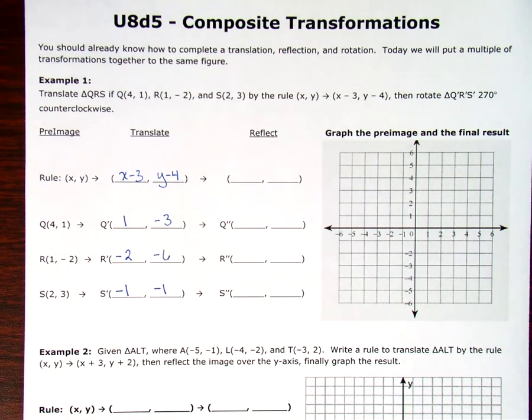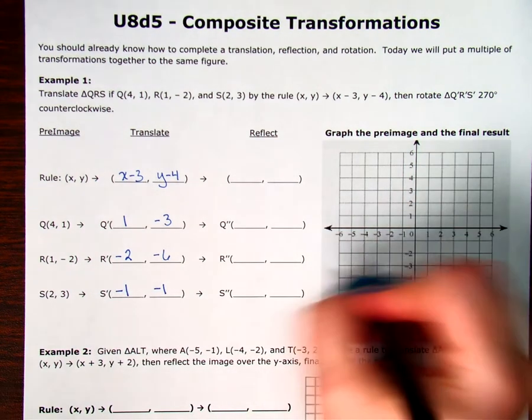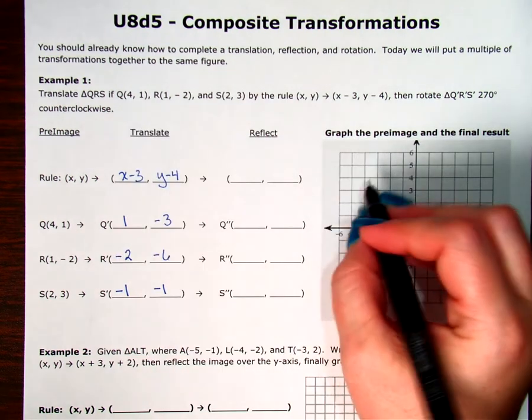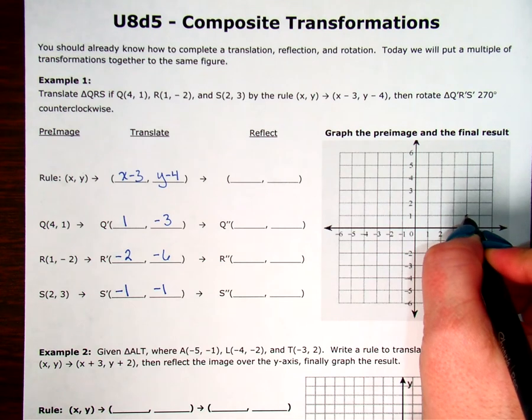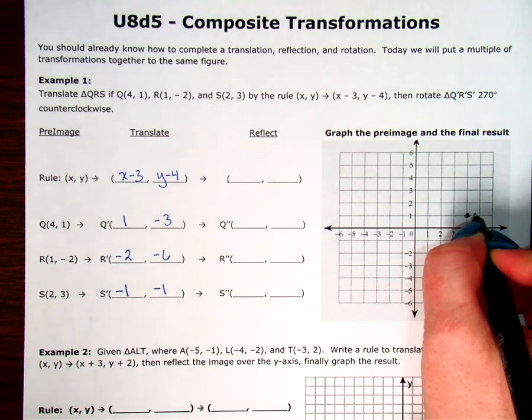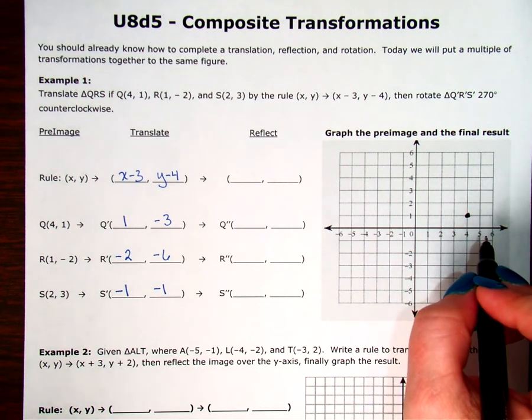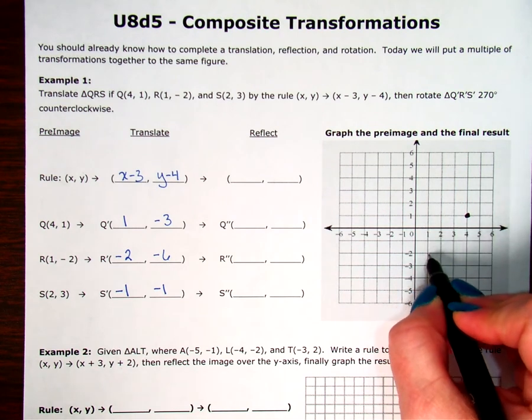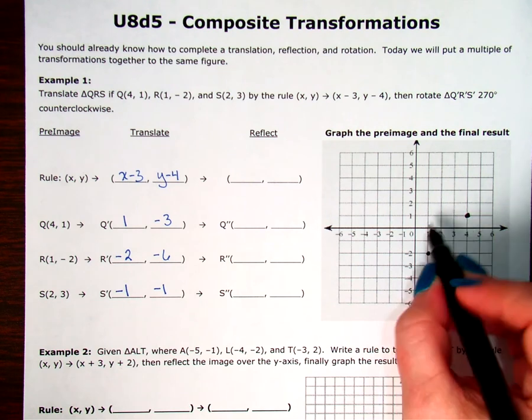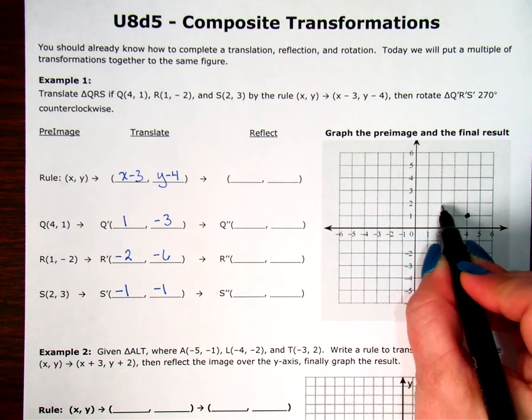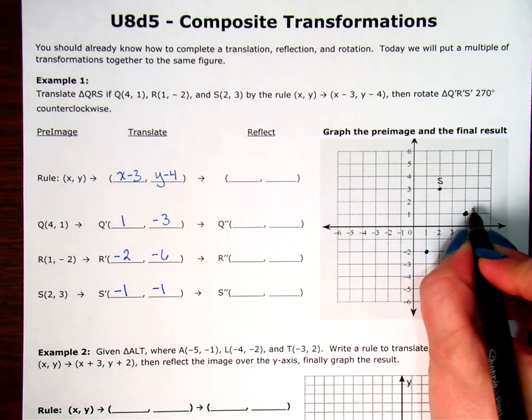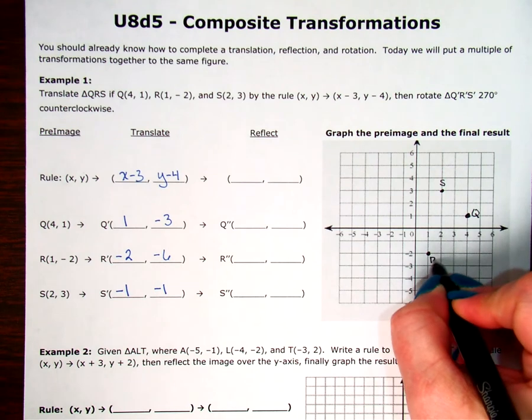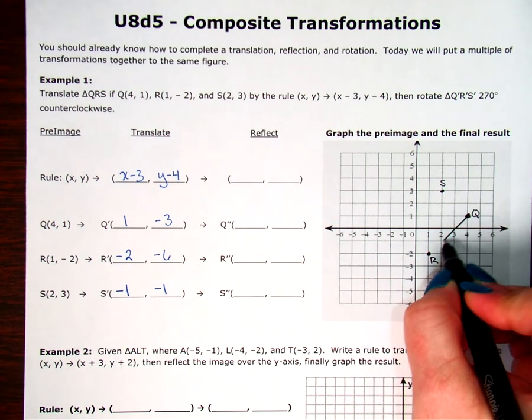So, I'm going to graph all of my triangles here. I'm going to graph the first one. Triangle Q is at (4, 1). That is point Q. R is at (1, -2). And S is at (2, 3). So, this was my pre-image.